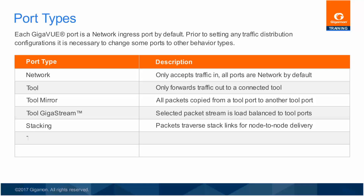Tunnel ports support source or destination Gigasmart encapsulation/decapsulation operations, or Cisco R-SPAN destination decapsulation. Tunnel ports also support Gigasmart NetFlow generation as the origin of transmitted flow summaries.